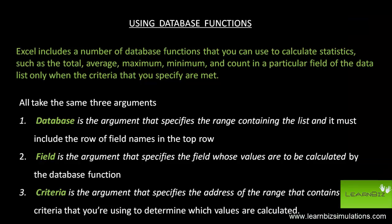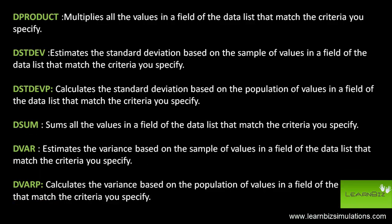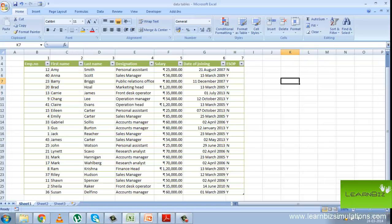Next we look at using database functions. Excel includes a number of database functions that you can use to calculate statistics such as total, average, maximum, minimum, etc. These are very similar to Excel functions except that these pertain to the particular data list. All functions take the same three arguments: database specifies the range, field specifies the field whose values are to be calculated, and criteria specifies the address of the range that contains the criteria. We have several functions like D average, D count, D count A, D get, D max, D min, D product, as well as standard deviation based on sample or population values, sum, and variance. All these functions calculate based on the criteria that you specify.